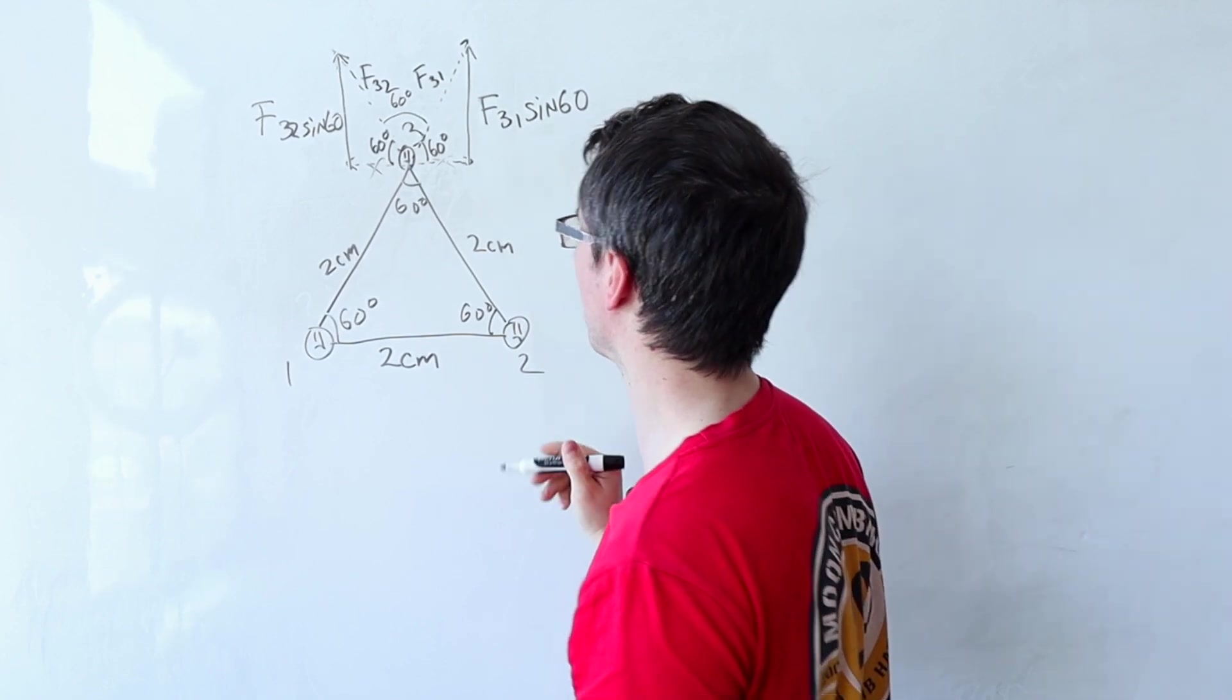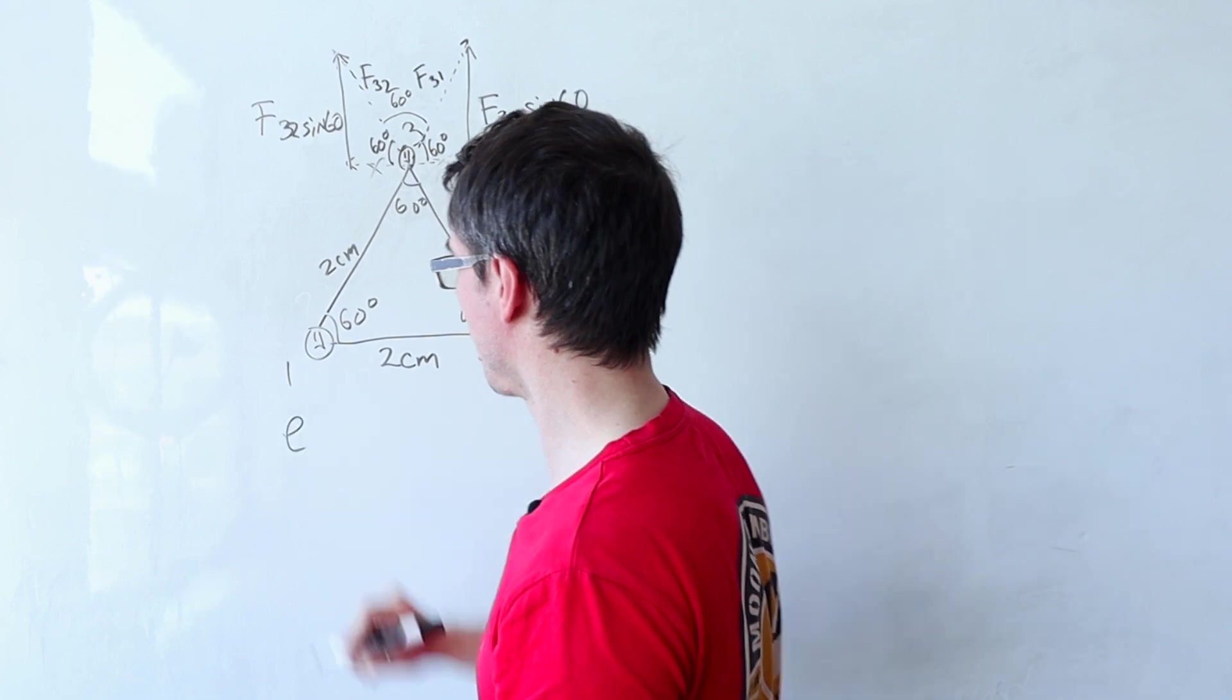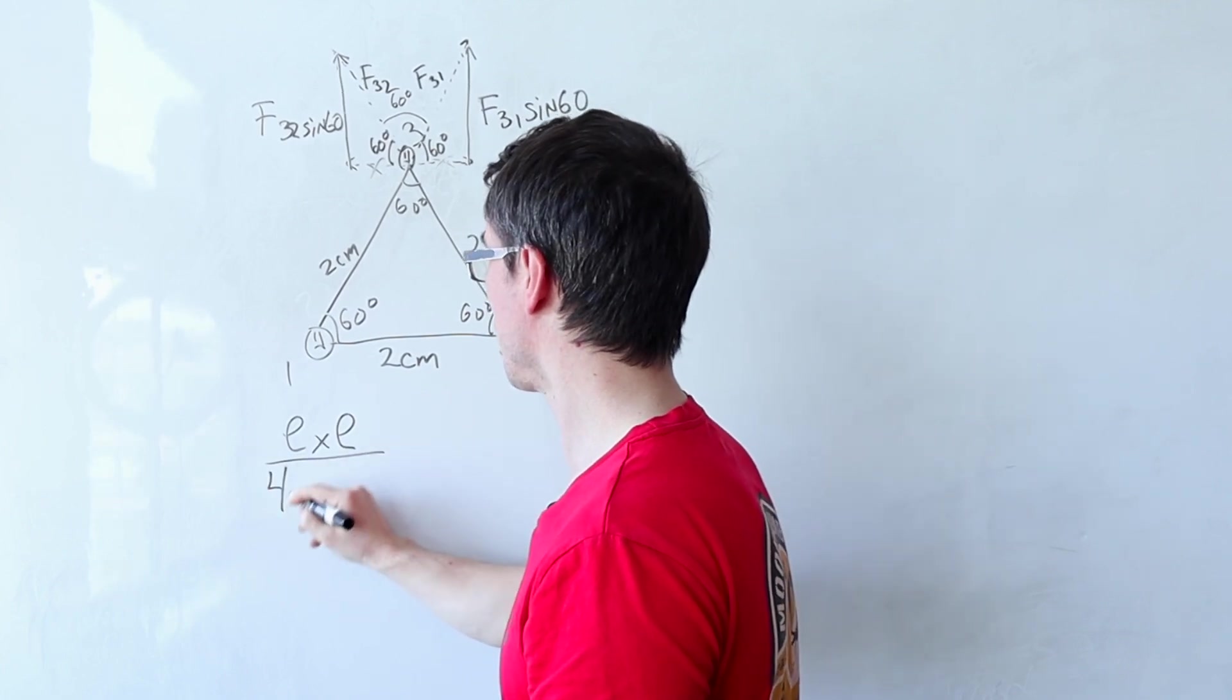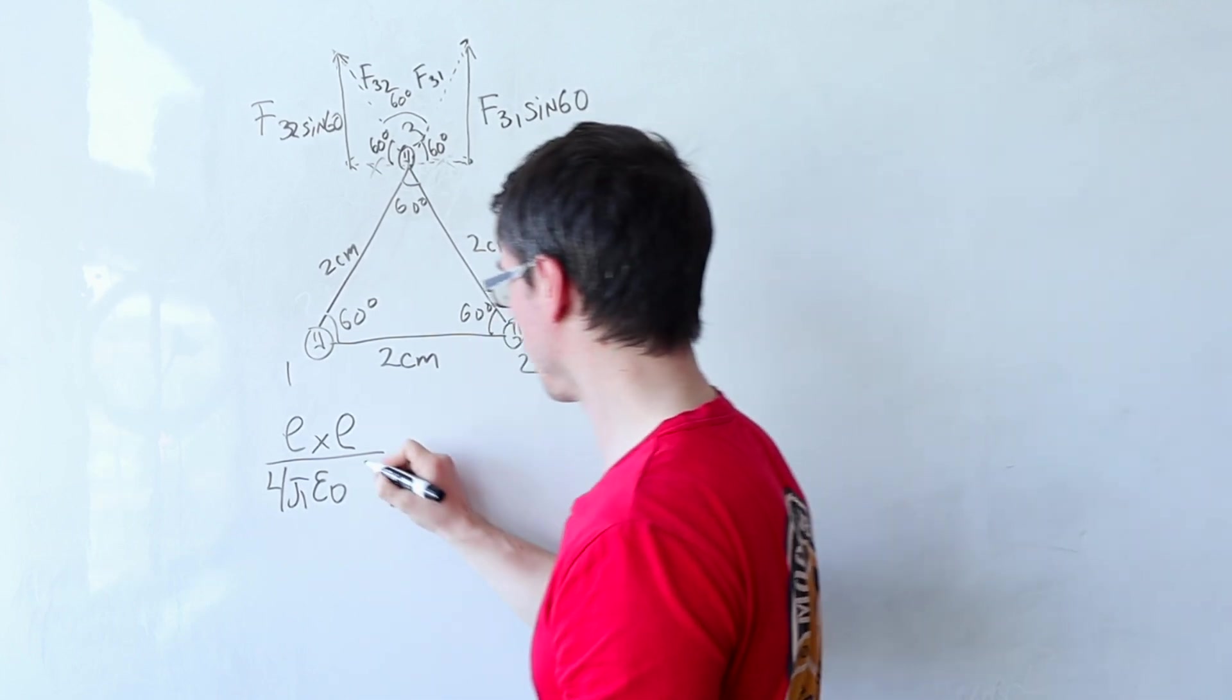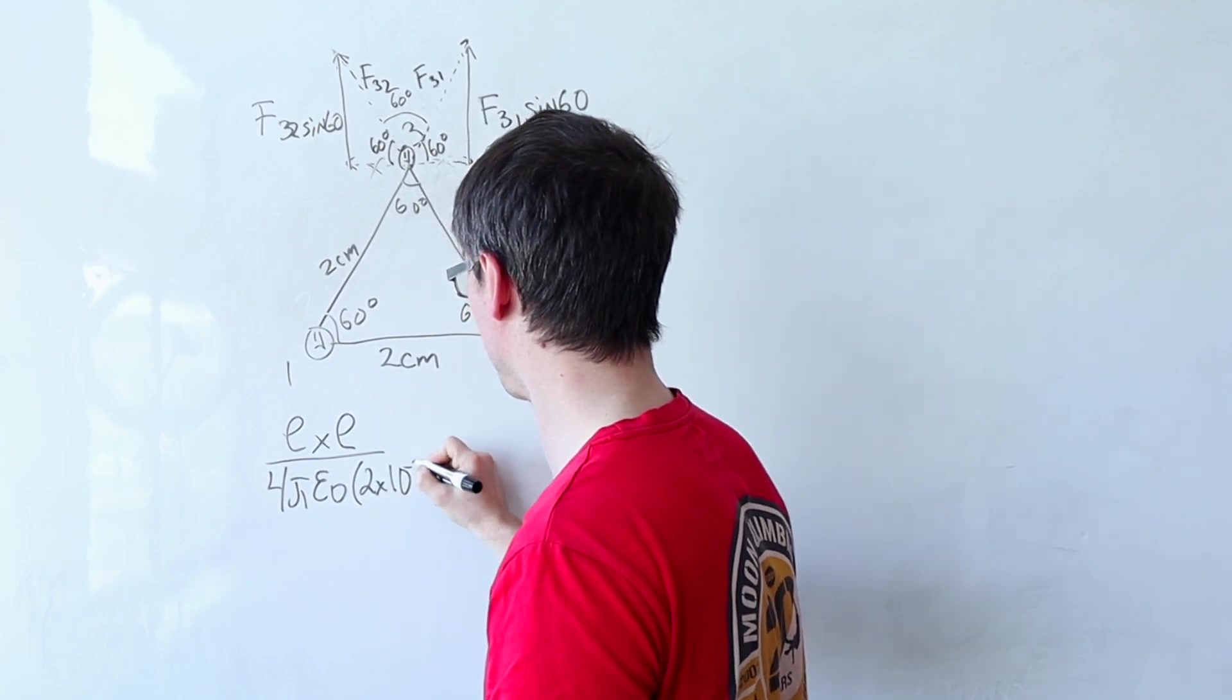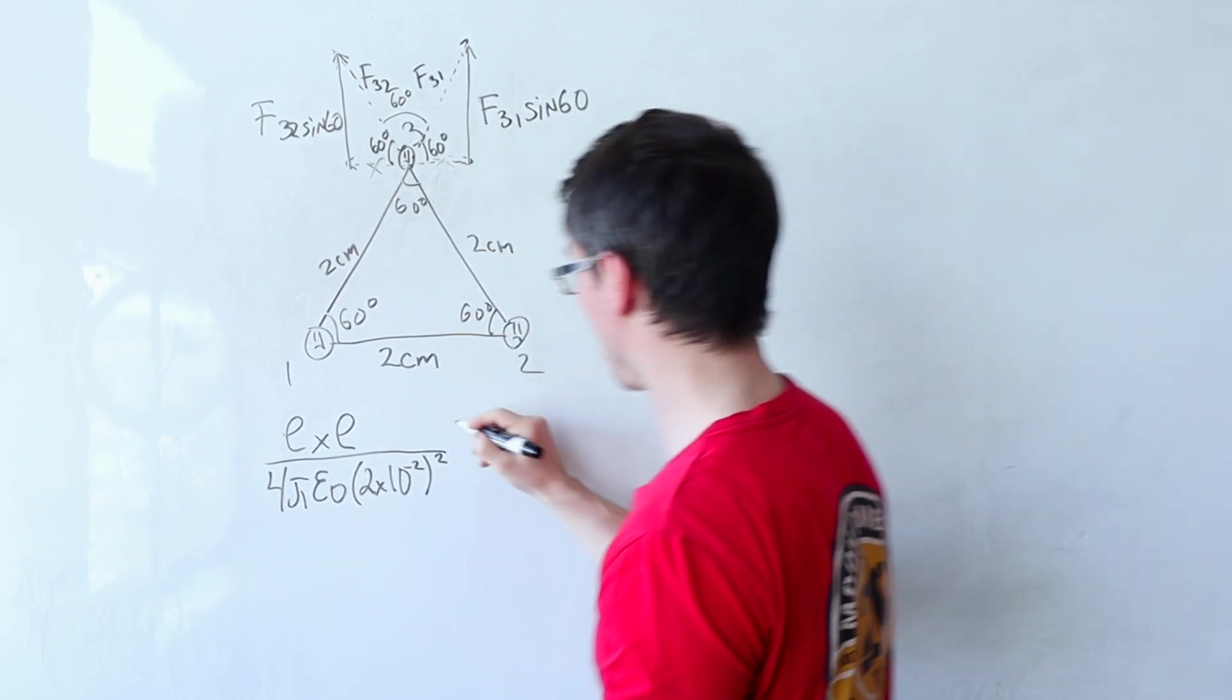Well what is the force going to be? Due to Coulomb's law the force will be the magnitude of one charge which is the electron charge times the magnitude of the other charge. Divide that by four pi epsilon naught times the distance between them squared. Do not forget the square. So it's going to be two times 10 to the power of minus two squared, multiplied by sine of 60.